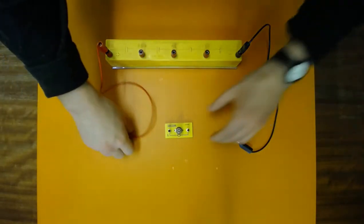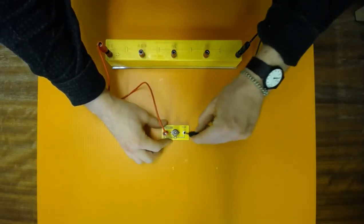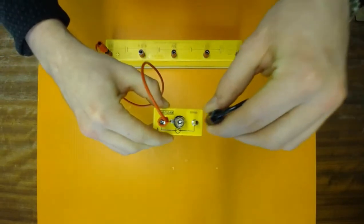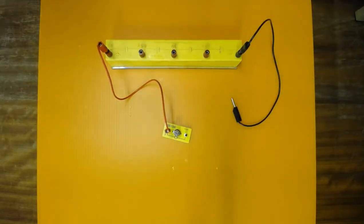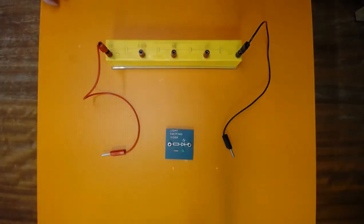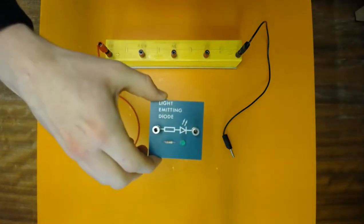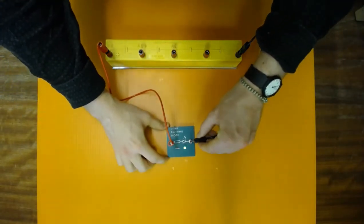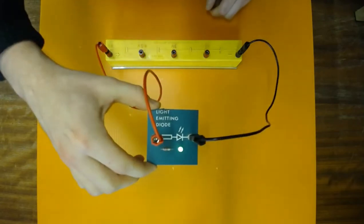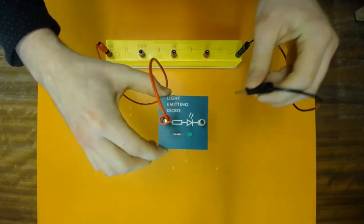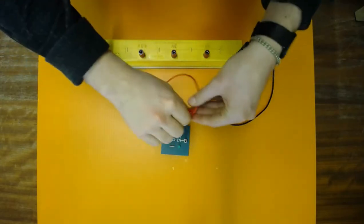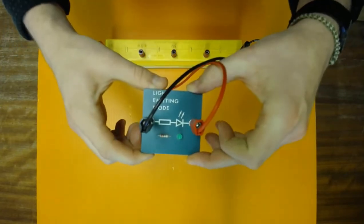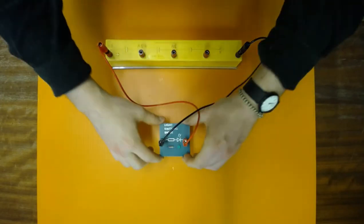Next up we've got a bulb. And finally a light emitting diode or LED. Note that if I change the polarity here so the electricity runs the other way, the light does not light up.